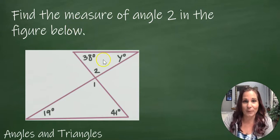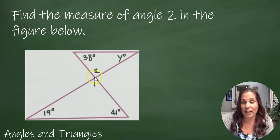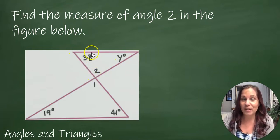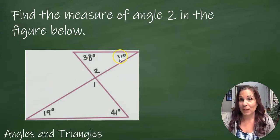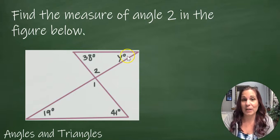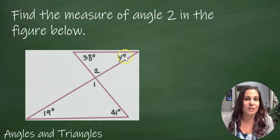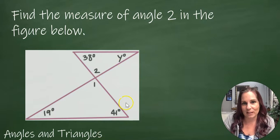Find the measure of angle 2 in the figure below. So I see that angle 2 is in a triangle with an angle that's 38 degrees and an angle that's y degrees. That doesn't really help me. I don't know what y is, I haven't found that variable yet. It's an unknown.